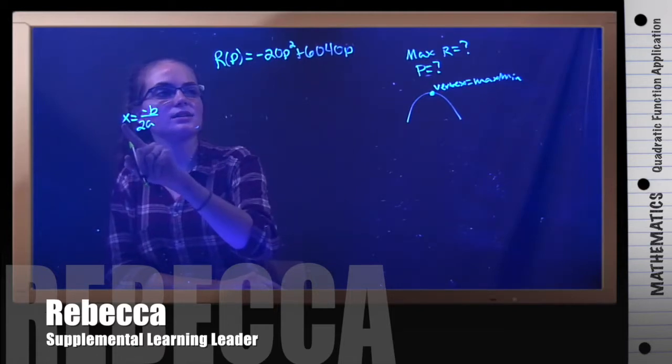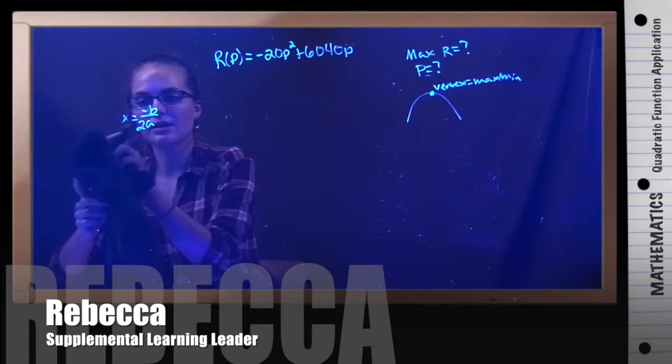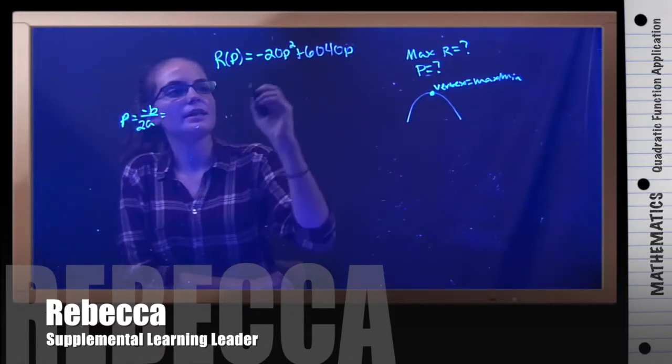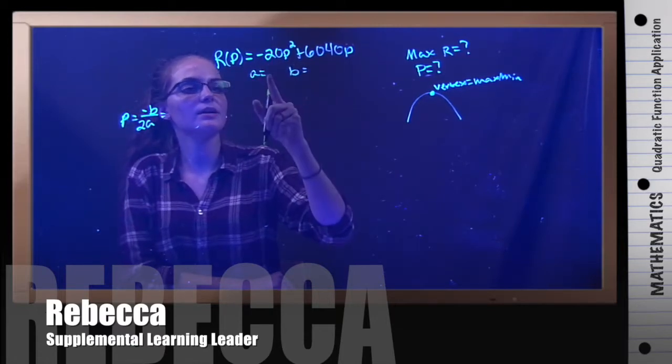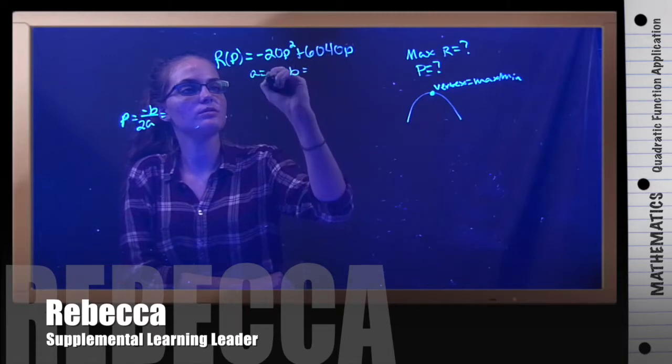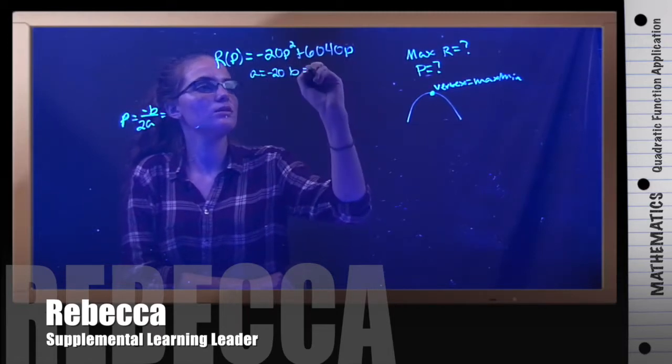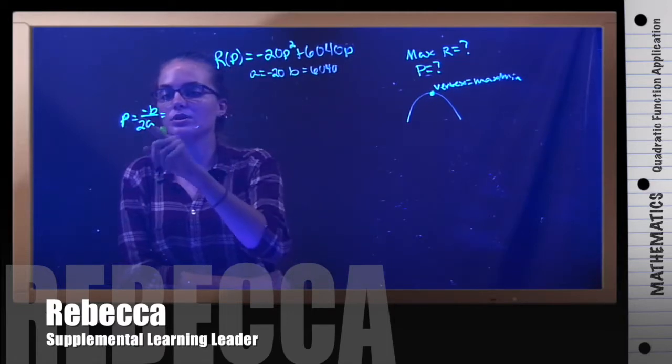In this case it's not x, it's actually p, because our variables are not x and y, our variables are p and r. Now we have to figure out what a and b are. A is the coefficient in front of p squared, so a should be negative 20. And b is the coefficient in front of p, so that should be 6040. Now we can plug them into our formula.